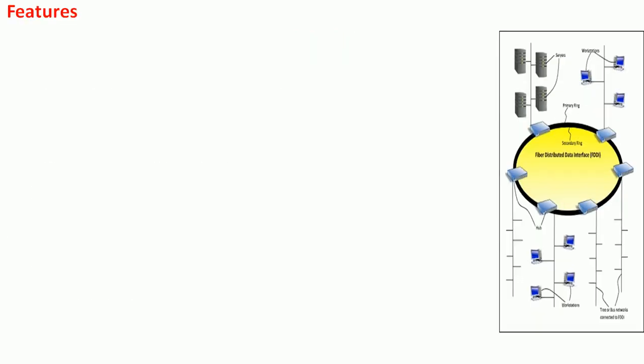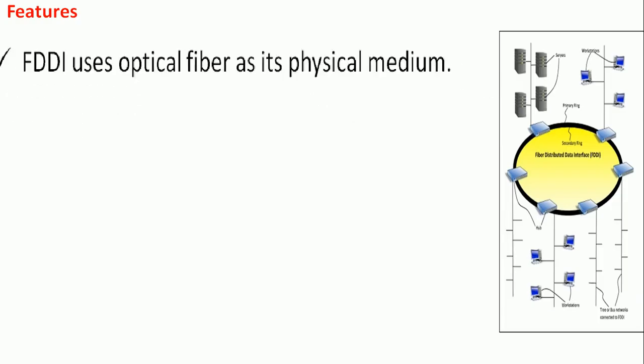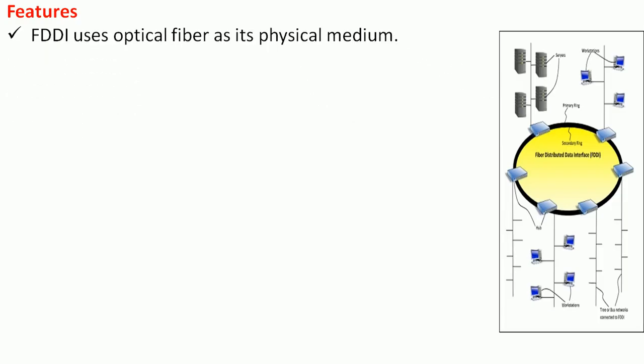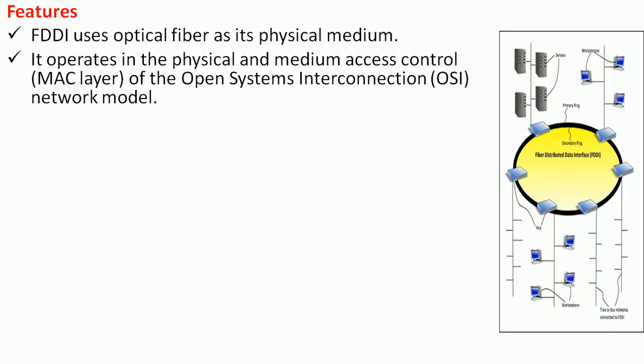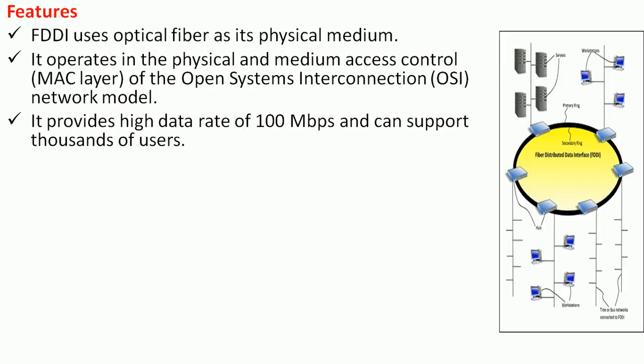FDDI uses optical fiber as its physical medium, which is the fastest medium through which data can be transferred. It operates in the physical and Media Access Control (MAC) layer of the OSI network model, which contains seven layers. It provides a high data rate of 100 Mbps.